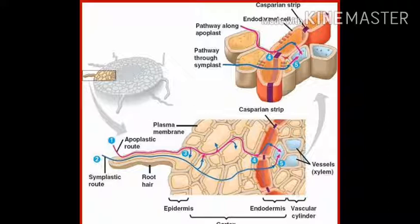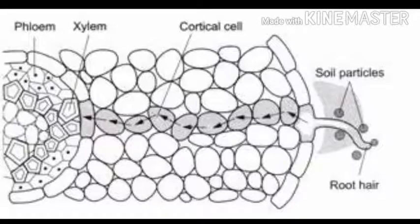Water is absorbed by osmosis, while the minerals are absorbed as ions by active transport. Active transport requires cellular energy against diffusion. The cell membrane has transport proteins that allow these ions to cross the membrane.